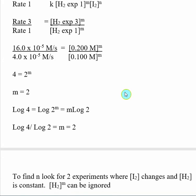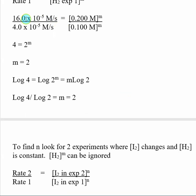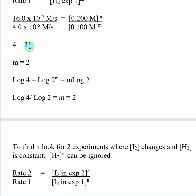Plugging in the numbers: the rate in experiment three was 16×10⁻⁵, the rate in experiment one was 4×10⁻⁵, giving a ratio of four. On the right-hand side, dividing 0.2 by 0.1 gives two, raised to the power M. Since two raised to the second power equals four, M is equal to two.